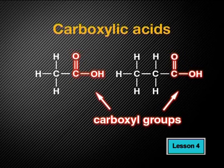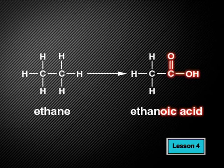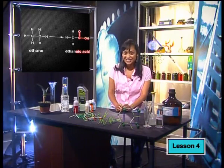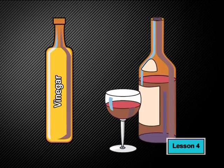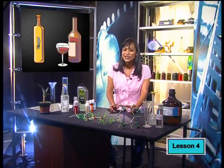Carboxylic acids all have a double bonded oxygen in combination with the hydroxyl group we saw in the alcohols. This functional group is called the carboxyl group. Can you see a pattern in the names of these two molecules? When there is a carboxyl group on an organic molecule, the end of the name changes from the usual E at the end of the backbone molecule to 'oic acid'. So this molecule, based on ethane and with a carboxyl group added, is called ethanoic acid. This is the same acid that is made when wine is left open so that air can enter the container — yeast and bacteria use the ethanol and oxygen to make the sour-tasting ethanoic acid. This is the same process used to make vinegar.